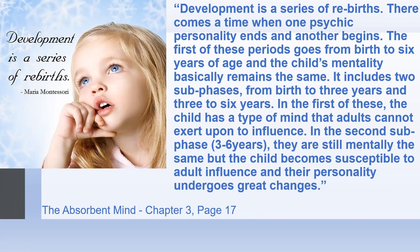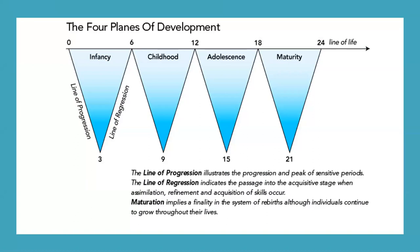Montessori referred to these planes as the series of rebirths, noting they correspond to physical growth and changes. Each plane of development provides the optimal time for learning in specific areas. Development is intense at the beginning of each plane, then consolidates, and finally trickles into the next. The first and third planes — infancy and adolescence — are periods of intense creation, whereas the second and fourth planes — childhood and maturity — are periods of calm and consolidation. So these planes are cyclical.